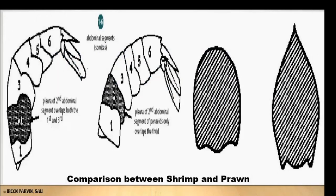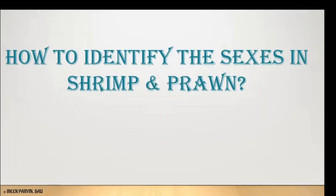In the right side picture, in the case of prawn the dorsal surface is smooth at the abdomen, while in the case of shrimp they have a complex or simple ridge at the dorsal apex of the abdomen. In the left picture, in the case of prawn the second pleura overlap both the third and first ones, while in the case of shrimp the second pleura overlap only the third one.